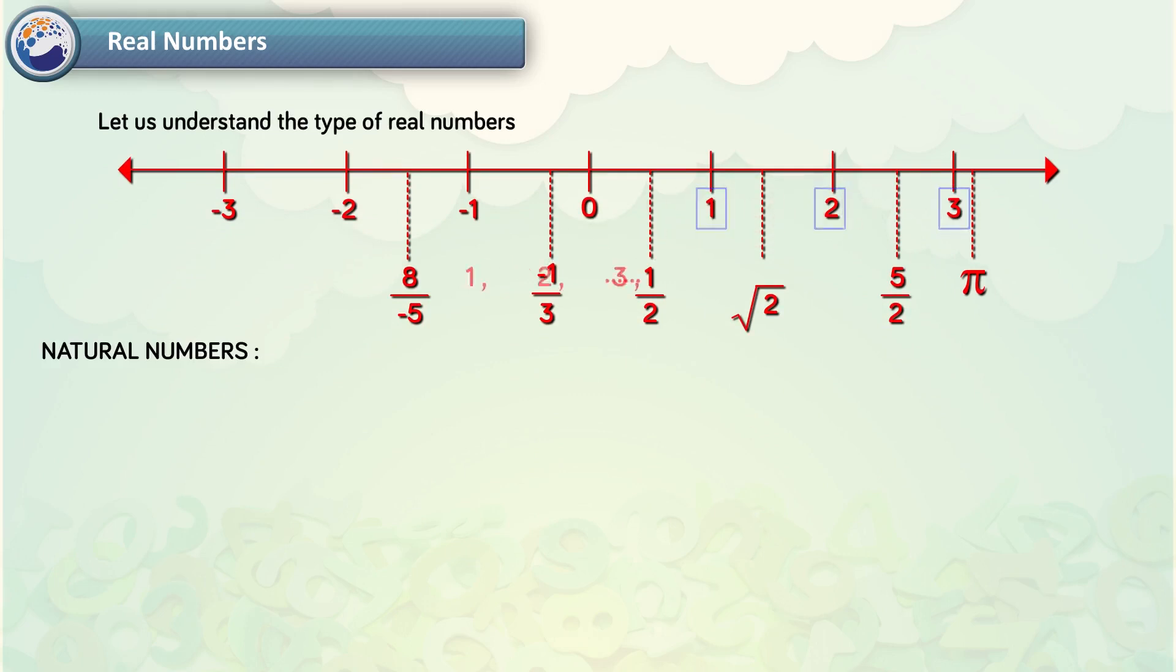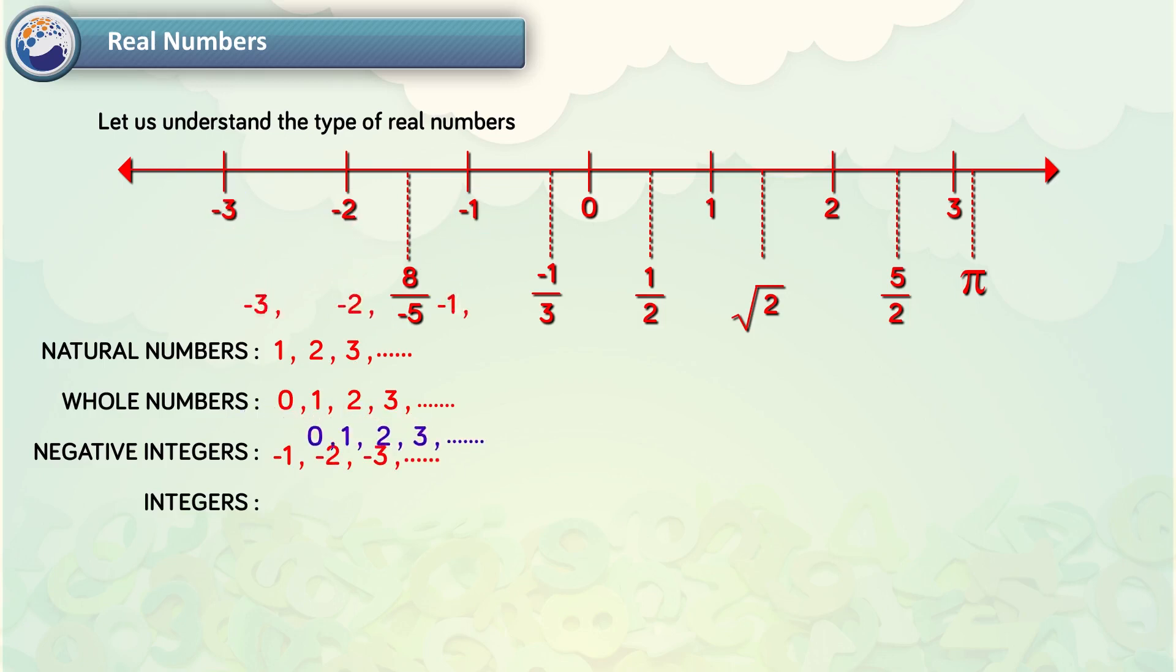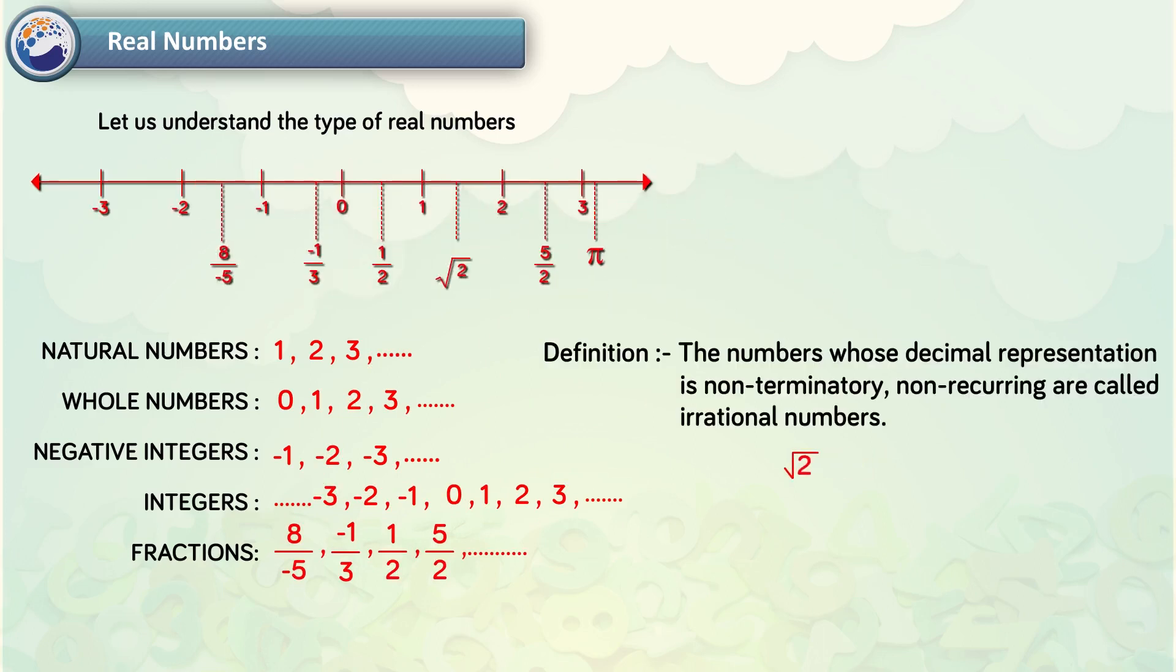Natural numbers are 1, 2, 3, etc. Whole numbers start from 0 and include all natural numbers. Negative integers are –1, –2, –3, etc. Integers include 0 and positive and negative integers. Fractions are of the type 8 upon –5, –1 by 3, 1 by 2, 5 upon 2, etc. Irrational numbers – the numbers whose decimal representation is non-terminatory, non-recurring, are called irrational numbers.